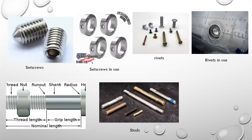We have set screws and different types of rivets — rivets in use on an aircraft fuselage, essentially an aircraft wing. And then studs. Over here in this diagram, we are showing a bolt and a nut and its various parts. Thank you very much.